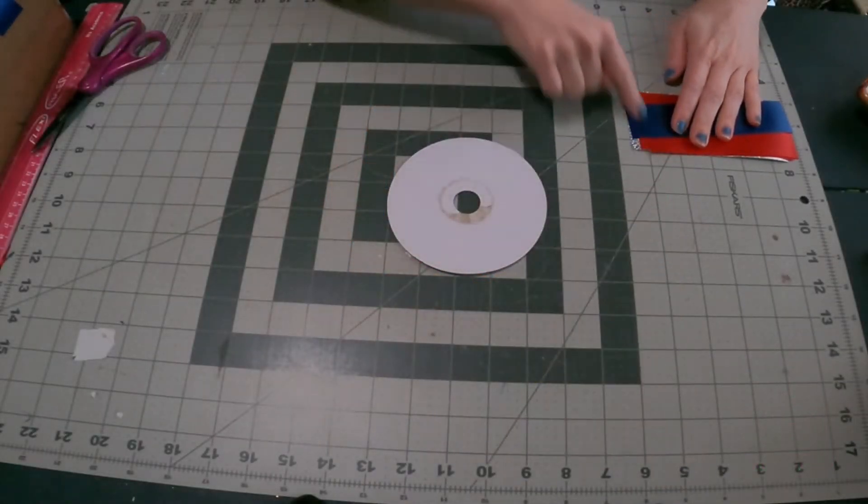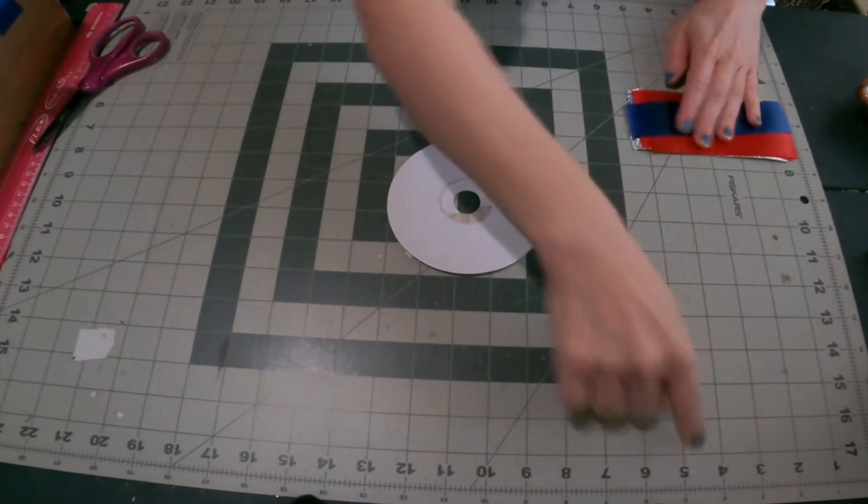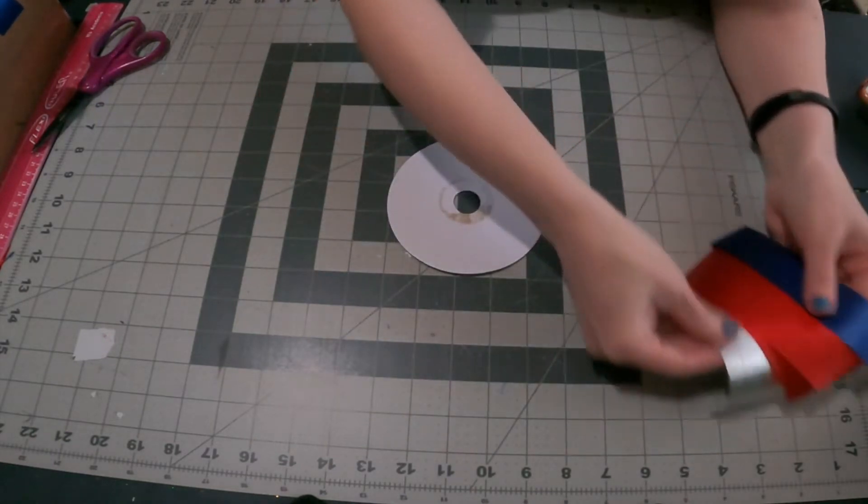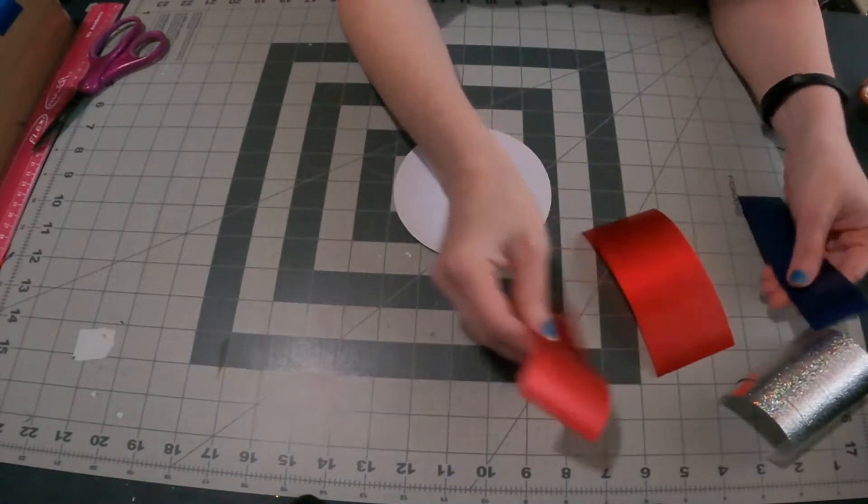First I have some ribbons cut at 5 inches in length. If you're doing a full size mum you'll want to do 6 inch length and a bigger size backer.